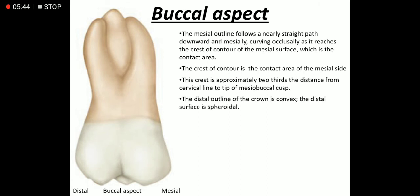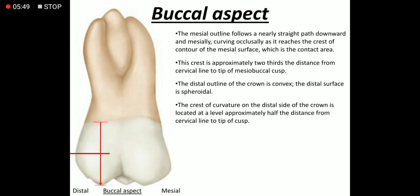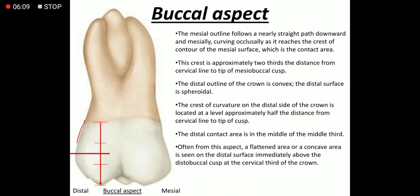The distal outline of the crown is convex; the distal surface is spheroidal. The crest of curvature of the distal side of the crown is located at a level approximately half the distance from the cervical line to the tip of the cusp. The distal contact area is in the middle of the middle third. Often from this aspect, a flattened or concave area is seen on the distal surface immediately above the distobuccal cusp at the cervical third of the crown.